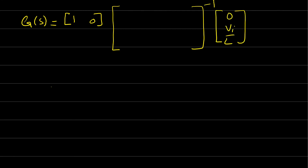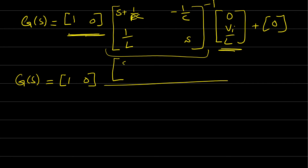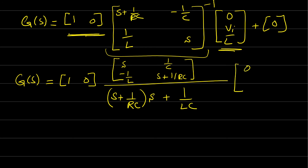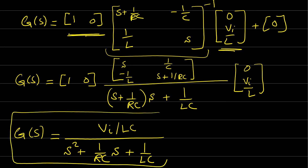SI minus A equals [S + 1/RC, -1/C; 1/L, S]. Taking the inverse and multiplying through, the open-loop transfer function is G(S) = (V_in/LC) / (S² + (1/RC)·S + 1/LC). This is the open-loop transfer function for the buck converter.